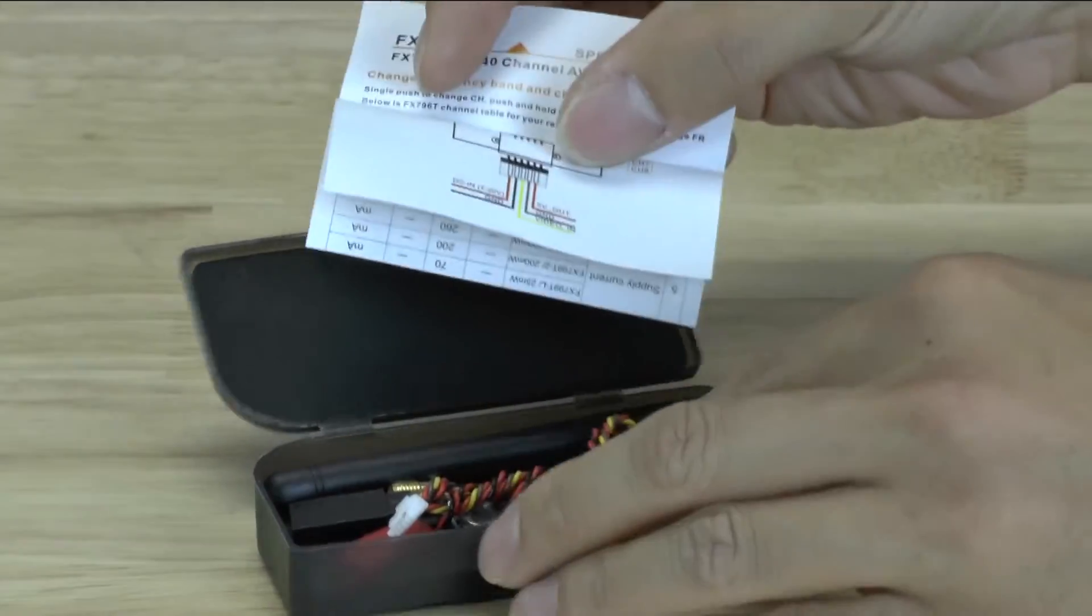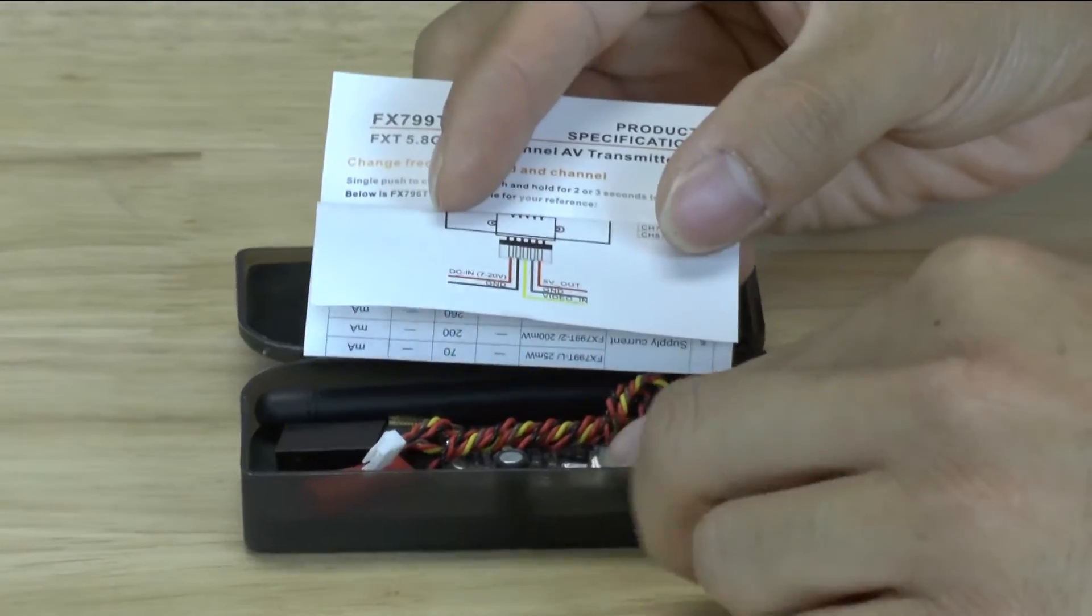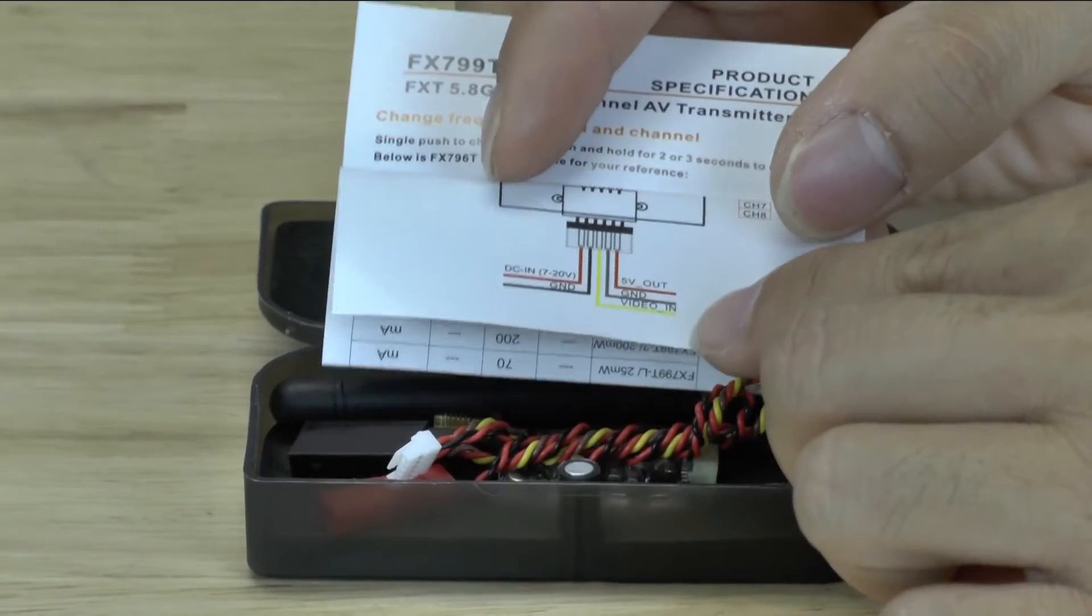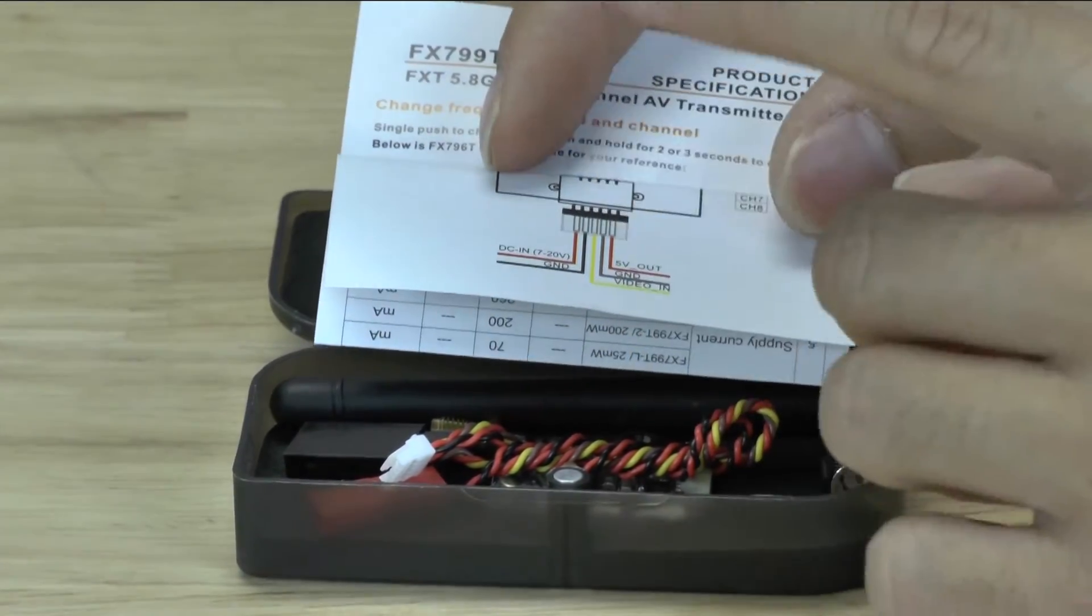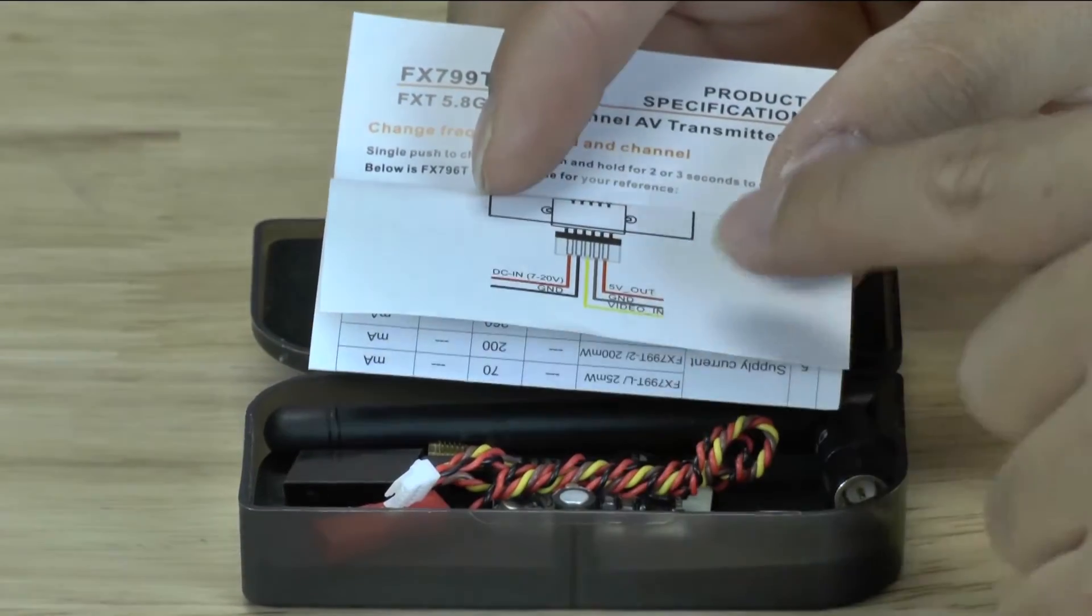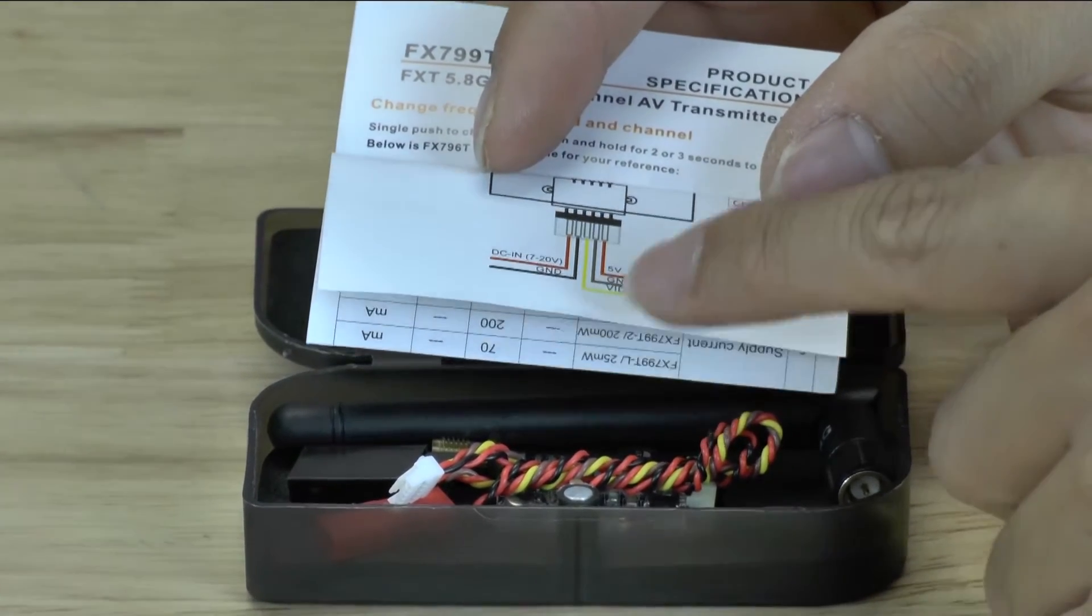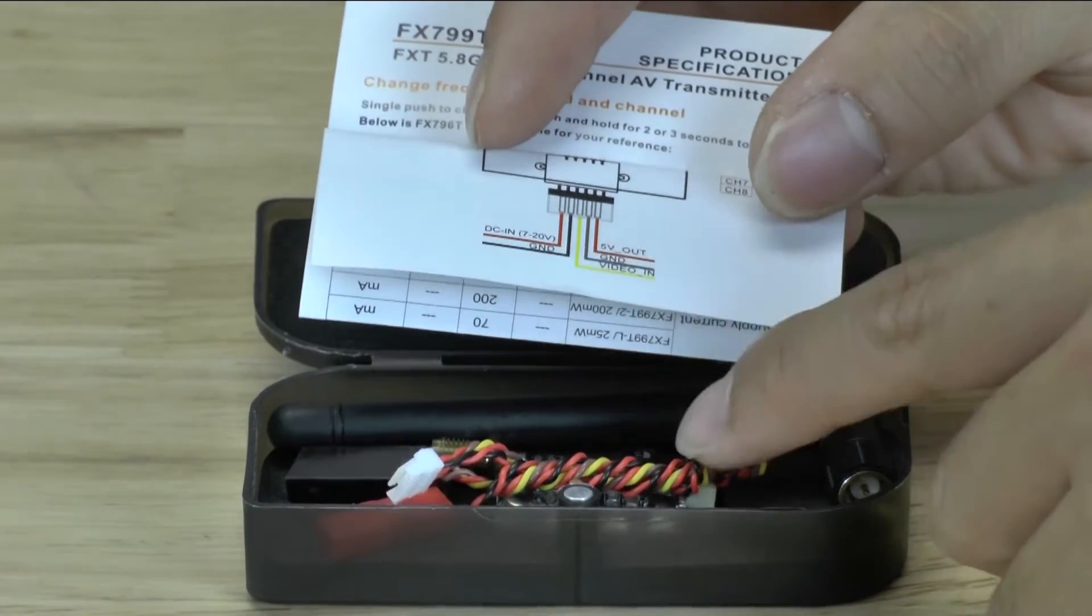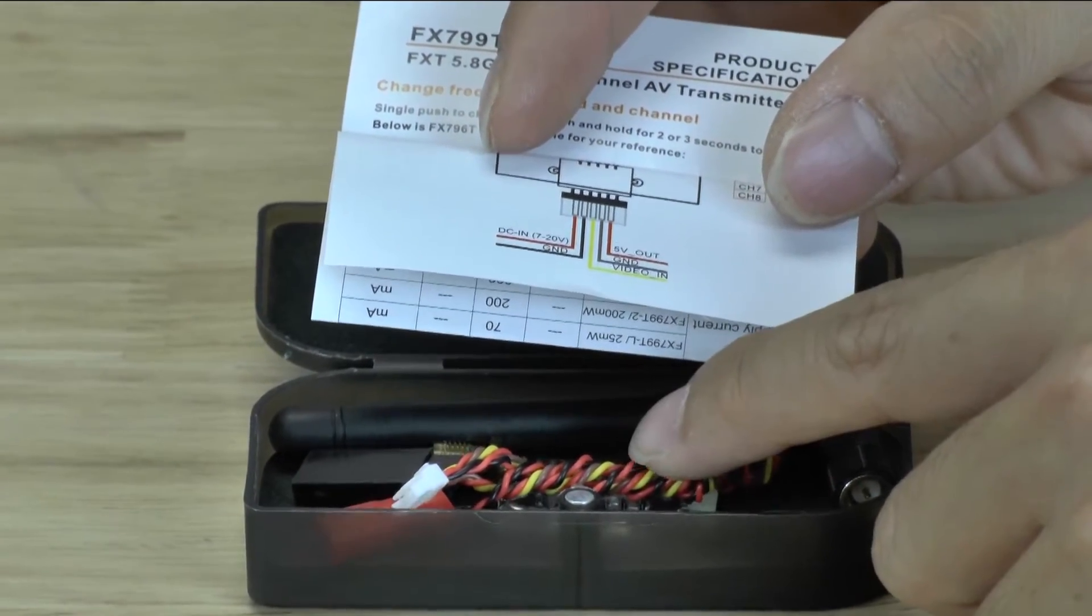If you zoom in on this small little diagram, what you'll see is that this video transmitter will accept a 7 to 20 volt in. So it can take a 3S battery and 4S battery, no problem. You don't have to have any step downs for it. And then what it'll do is filter out a 5 volt out to your camera. So you don't need to run a separate power to your camera when you're running this transmitter. And we'll give you a demo of that later on in this video.